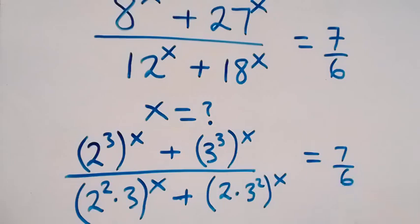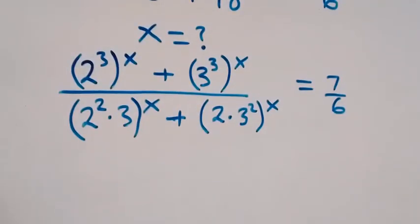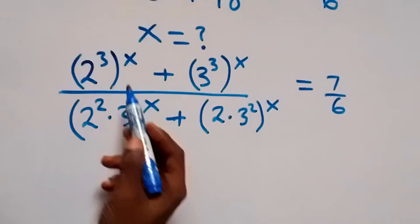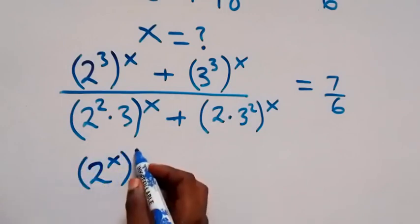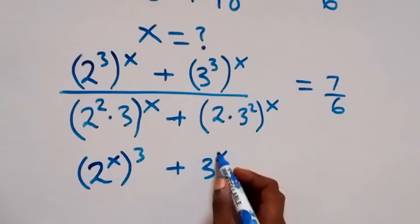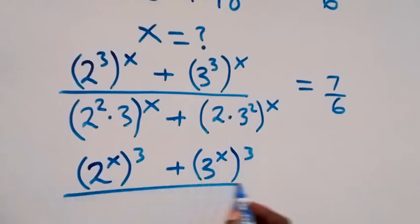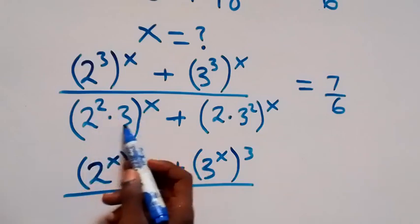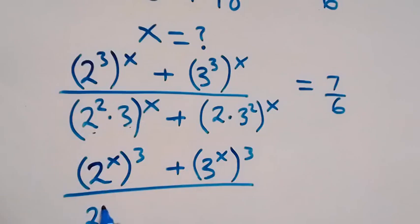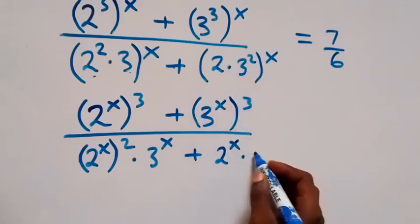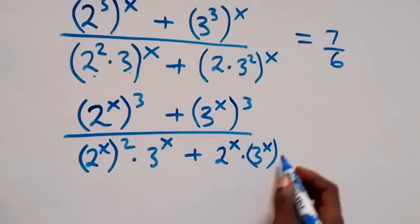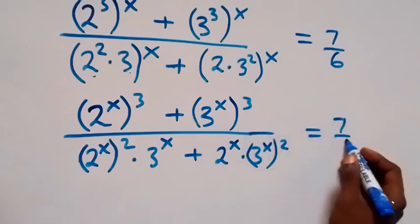In the next step we apply the law of indices, since the powers can be interchanged. We write this as 2 raised to the power x, then raised to the power 3, plus 3 raised to the power x, raised to the power 3. Divided by: the power of x affects both numbers, so we have 2 raised to the power x times 3 raised to the power x, all raised to the power 2, which equals 7 over 6.